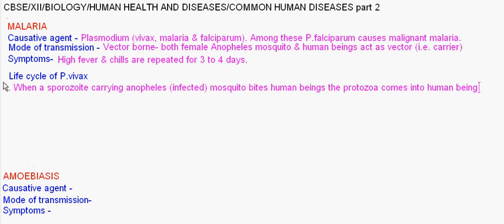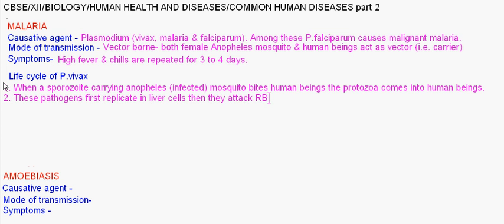the protozoan comes into human beings. These pathogens first replicate in liver cells, then they attack RBCs, that is red blood cells. They release hemozoin, which is a protein, and this causes rupture of RBCs. This results in repetitive or subsequent fevers and chills.